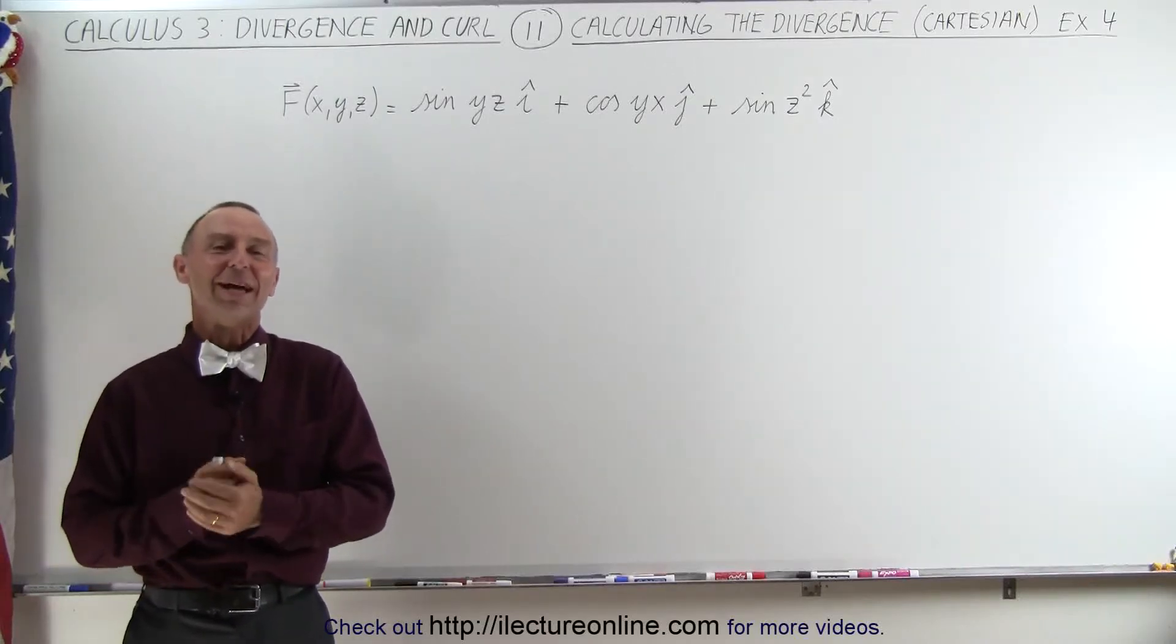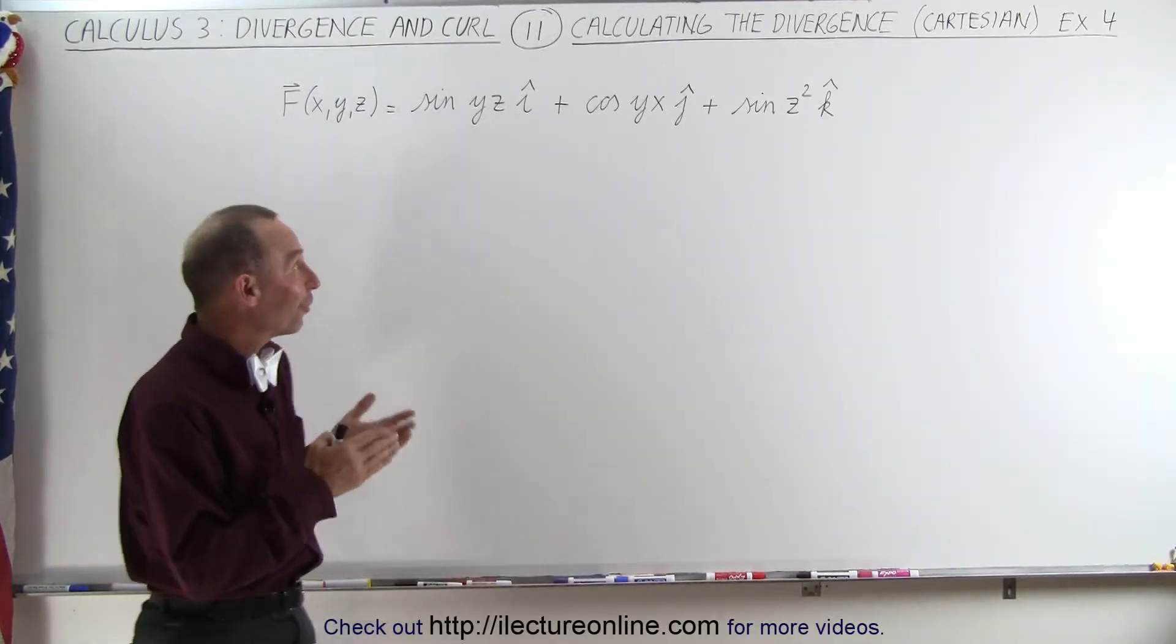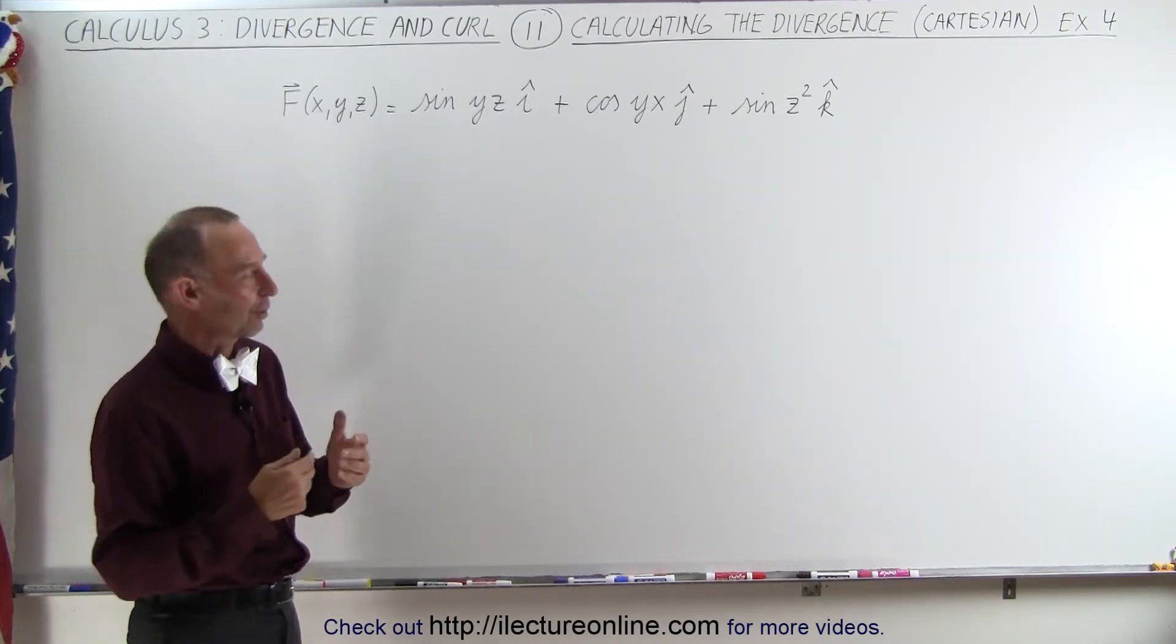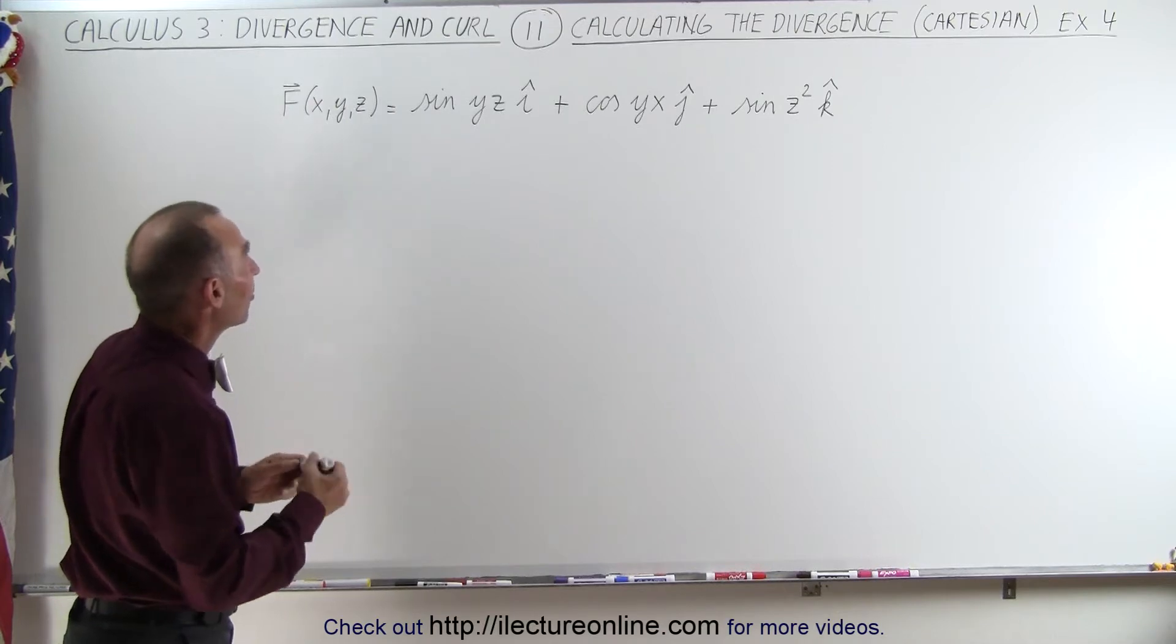Welcome to ElectronLine. Now let's take the divergence of a vector field that includes trigonometric functions, sines and cosines. The process is the same.